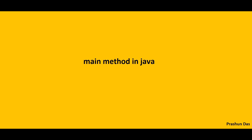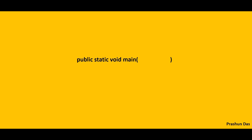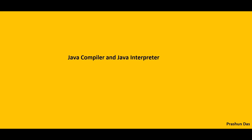Hi guys, this is Prashun here with yet another basic tutorial on Java. We all know about the main method in Java — it is the method where all execution starts. We know about its access specifier public, its return type void, and its property of being static. But do you know the actual reason why it is public, why static, and why it has no return type and is declared as void? In the next few minutes you will become aware of all these facts.